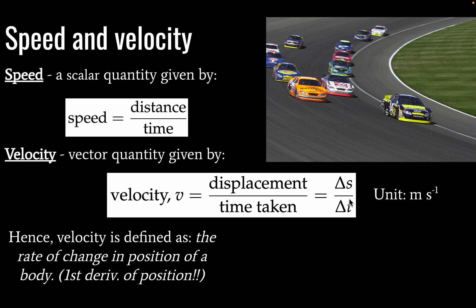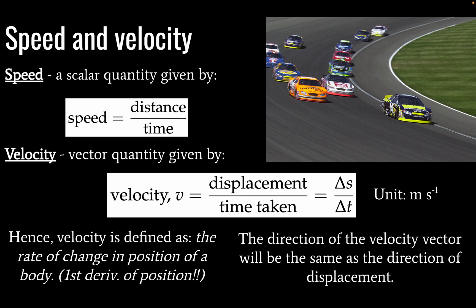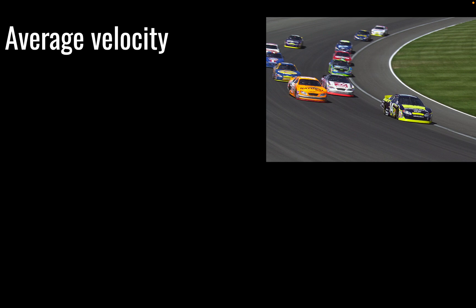Okay, so here, velocity is defined as the rate of change in position of a body. And calculus students may recognize that this is a first derivative of position. So direction of the velocity vector is going to be the same as the direction of displacement. That is always going to be the case when you multiply or divide a vector by a scalar. Your new vector will have the same direction.